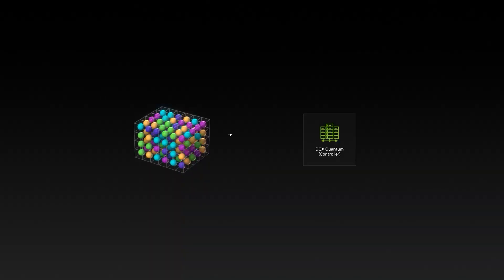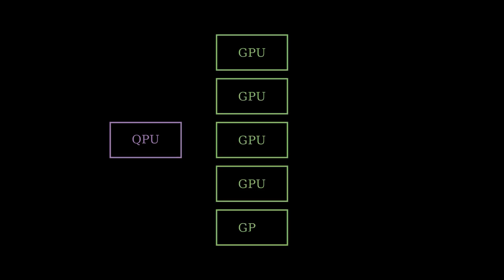Alright, so first, what even is a quantum-enabled supercomputer? Well, very simply, a quantum-enabled supercomputer is a supercomputer with a quantum processing unit, or QPU, as part of its architecture. This means that the QPU is seamlessly integrated with the rest of the computer. These systems will likely consist of several processing units, including a CPU, many GPUs, and a QPU. This will allow for rapid and efficient control of the quantum computer at a scale not previously seen.